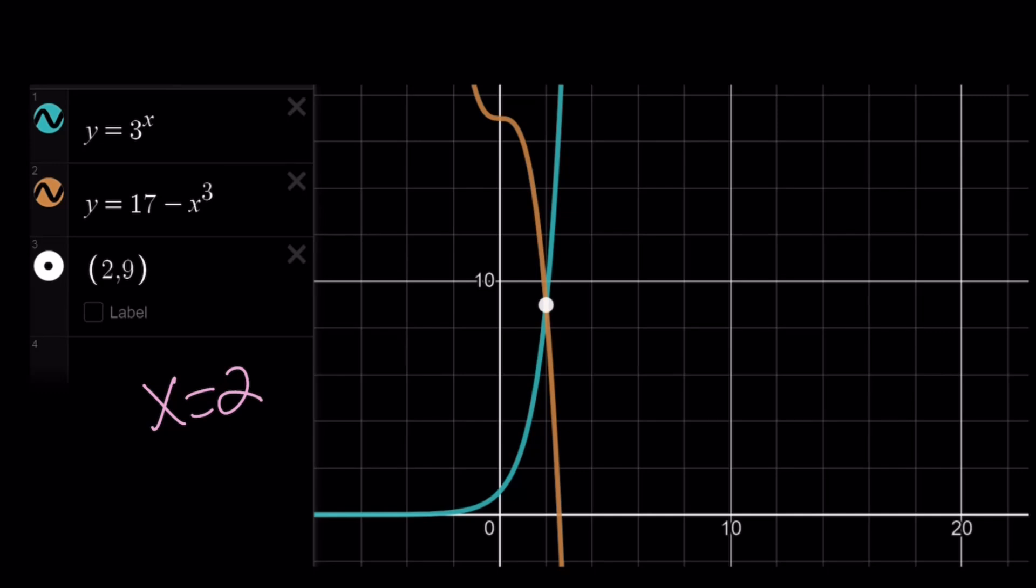So 17 minus x cubed is basically, remember the cubic function? It is always decreasing because it's negative, and 17 just brings it up 17 units, and 3 to the power of x is always increasing. It's exponential, and they intersect.